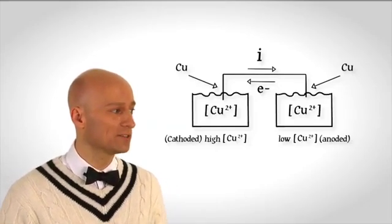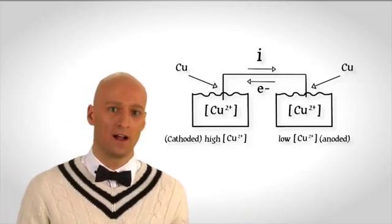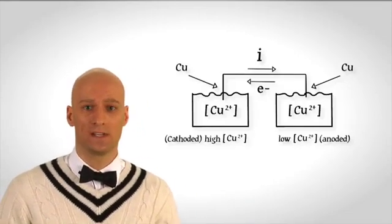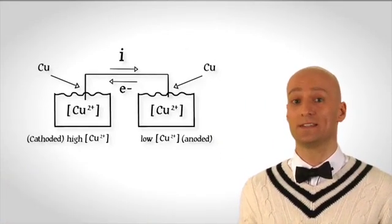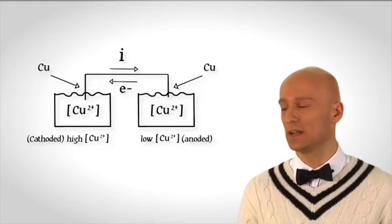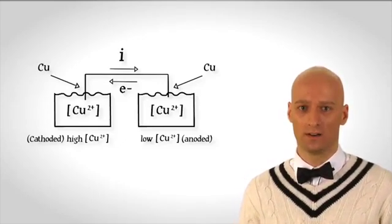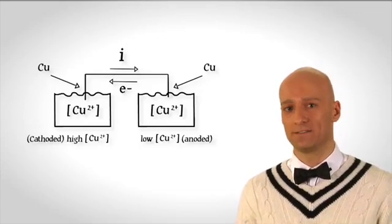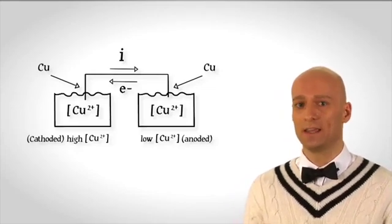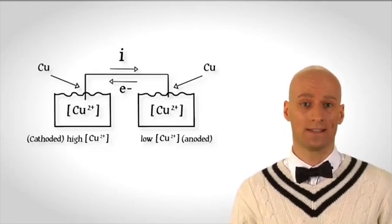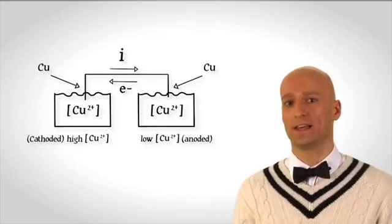The movement of electrons is from the right half cell to the left half cell. Since electrons are being lost from the right side, oxidation is taking place. By definition, the electrode at which oxidation takes place is the anode. Therefore, in the right half cell, we have oxidation and a copper anode. In the left compartment, where electrons are moving toward, we have reduction taking place. By definition, the electrode at which reduction takes place is the cathode. So in this concentration cell, even though both electrodes are chemically identical — both are elemental copper — the one on the right is acting as the anode, and the one on the left is acting as the cathode.